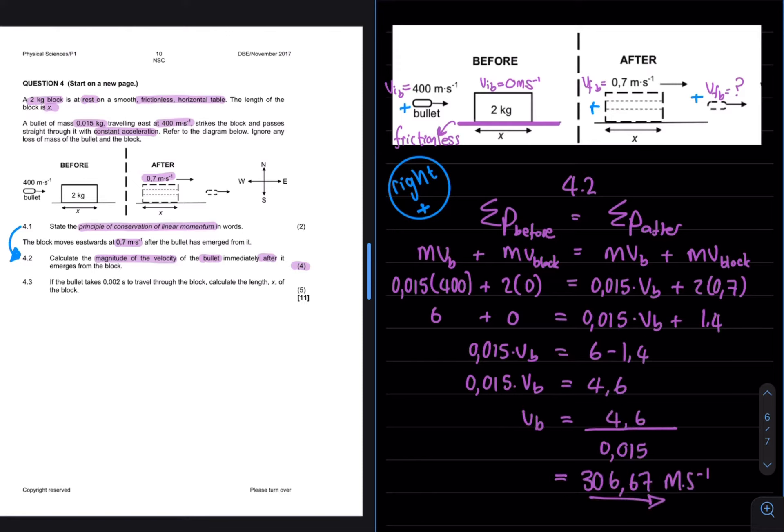We then obtain an answer of 306.67 meters per second, which makes sense, seeing as the bullet is entering with a velocity of 400, it will decelerate as it moves through the block, and therefore it should have a velocity smaller than the initial.